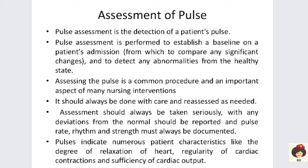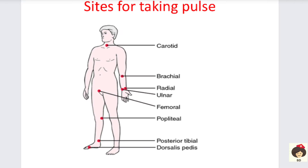Mainly, pulse will determine the functioning of the heart. The sites for checking pulse are: in the neck — carotid; in the upper arm — brachial; radial and ulnar in the lower arm; and in the lower limb — femoral, popliteal, posterior tibial, and dorsalis pedis.